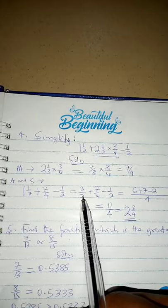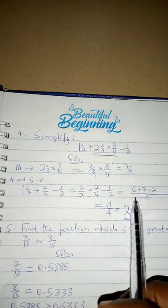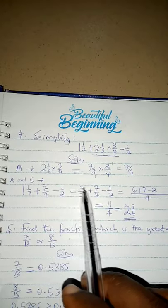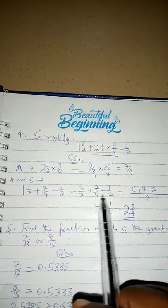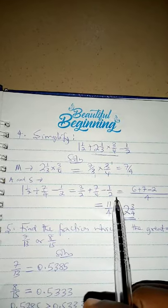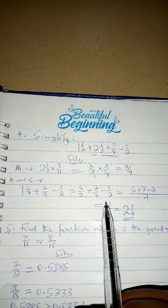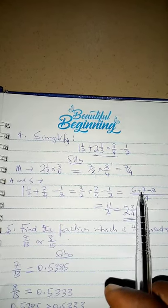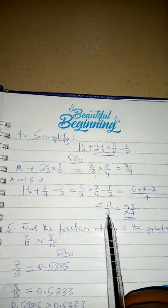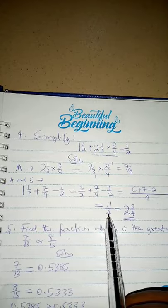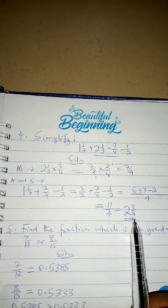Minus one and a half, convert to an improper fraction to get 3 over 2. The LCM of 4 and 2 is 4. Two in four is 2, times 3 is 6. Four in four is 1, times 7 is 7. So 6 plus 7 minus 2 is 11 over 4. Converting back to a mixed number: 4 divides 11 two times with 3 remaining, giving two and three-quarters.